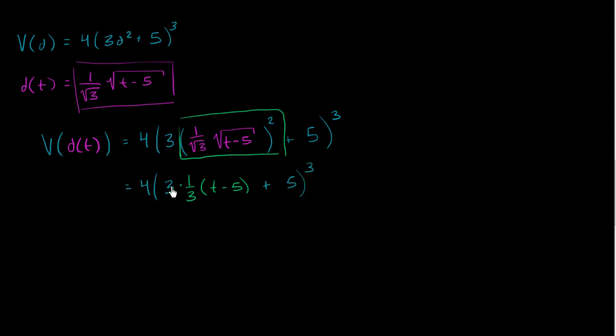Let's see, 3 times 1/3, well that's just going to be equal to 1. And so we are left with 4 times (t - 5 + 5), this does simplify nicely. So we're going to be left with 4 times t to the third power, 4t³.